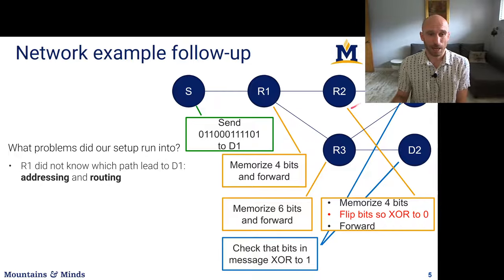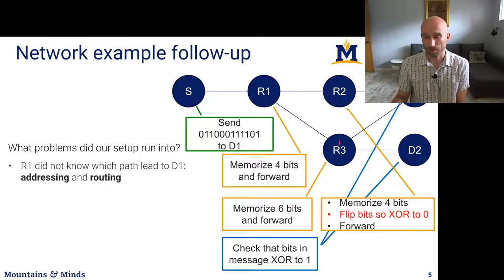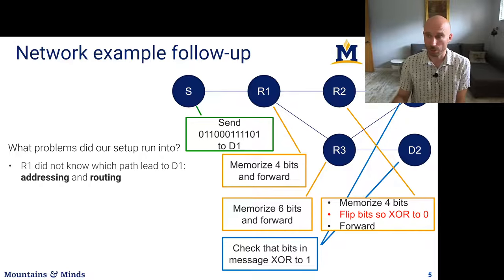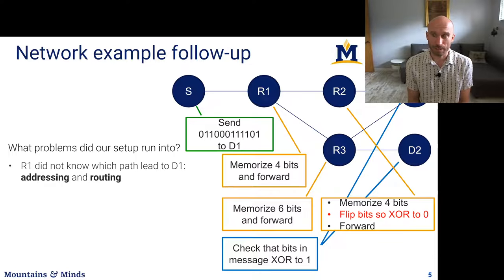The other problem is routing — how to forward data to the destination. A packet is sent from source to R1, and R1 knows the packet is for D1, but doesn't know whether to send it to R2 or R3. R1 only knows its locally connected routers and needs information about possible paths to destination D1 or the best path. There has to be some protocol that at minimum provides different path options and ideally some metric for comparing which path is better.